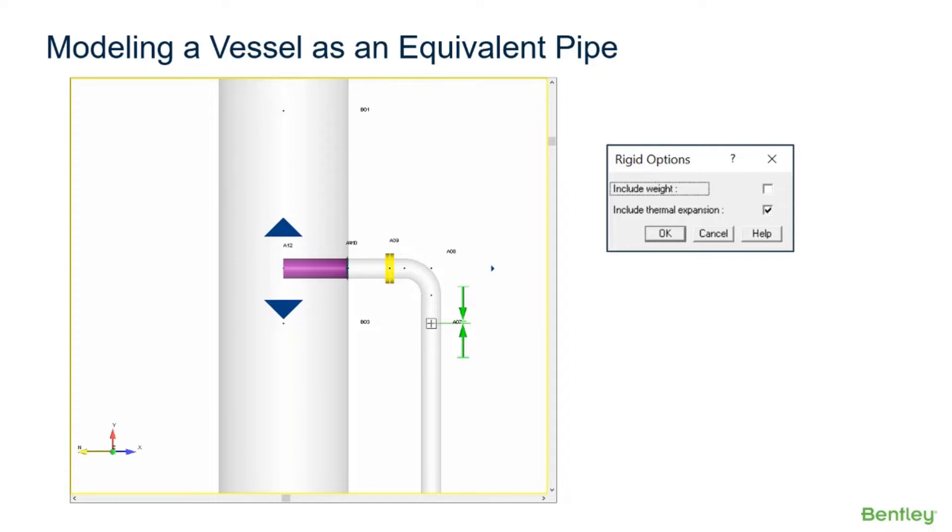Including thermal expansion on this element will estimate the radiothermal growth of the vessel, which will automatically be applied to the attached piping at point A11.